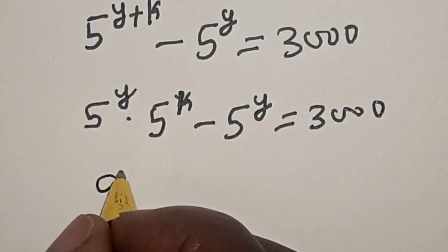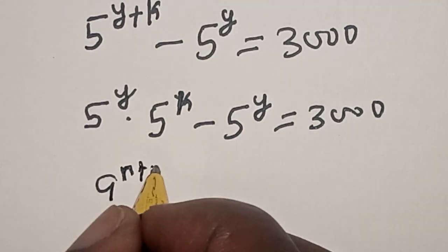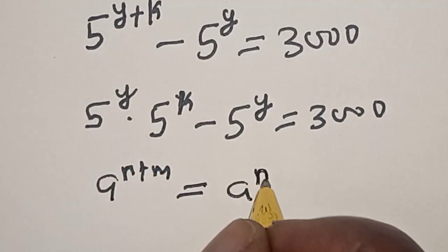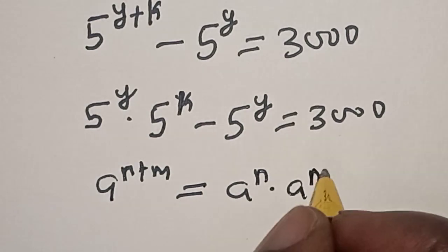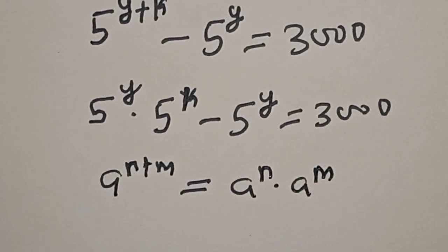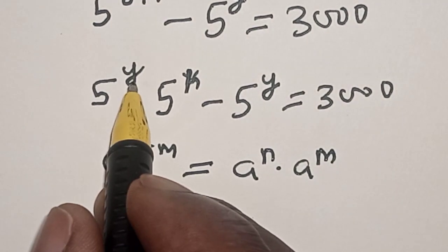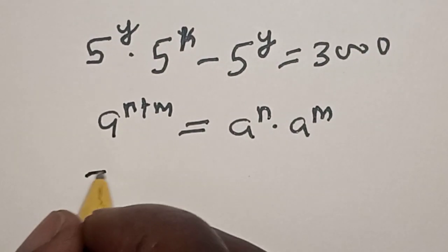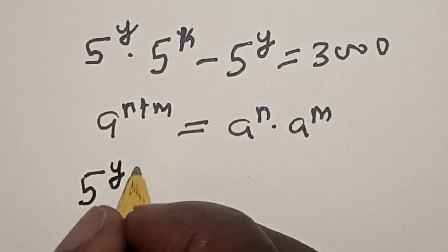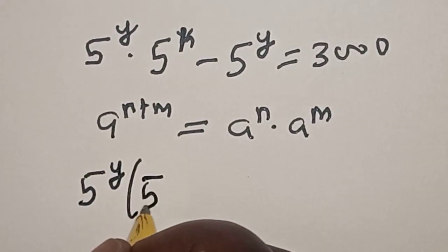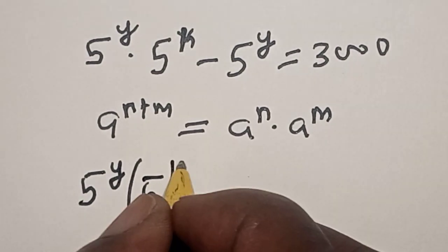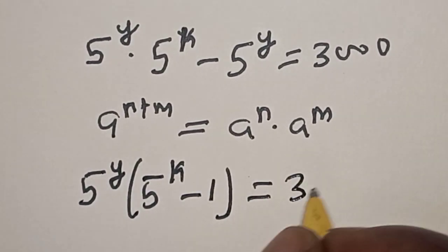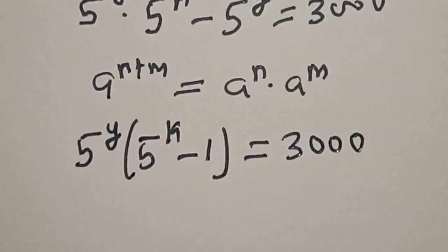That is, using the exponent rule: a raised to power n plus m equals a raised to power n multiplied by a raised to power m. Here, 5 raised to power y is common. Bringing it out, we have 5 raised to power y into 5 raised to power k minus 1, equal to 3,000.